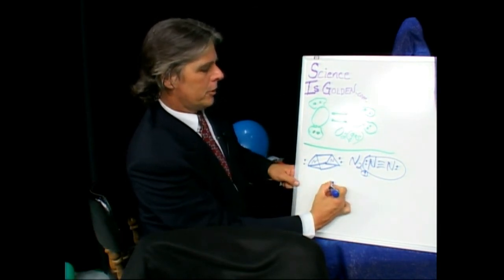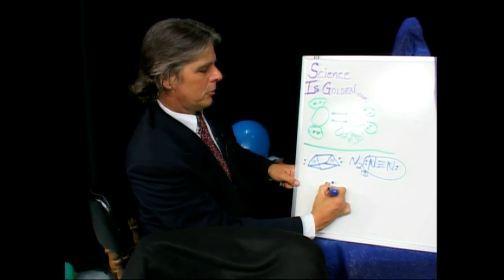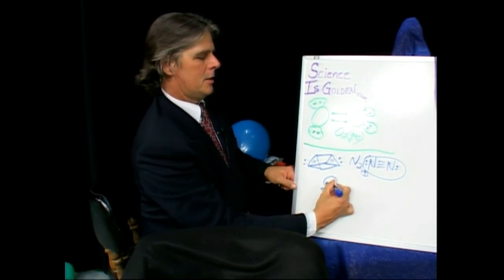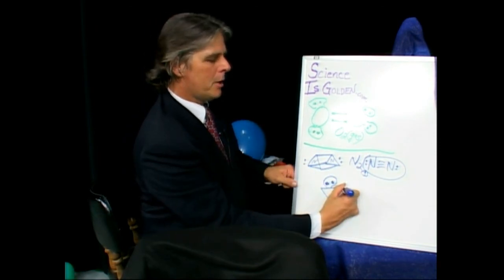Lone pair of electrons on the nitrogen. This is where we made him into the little alien, remember? Little sneaky guy hiding there. There's three bonds on a nitrogen.